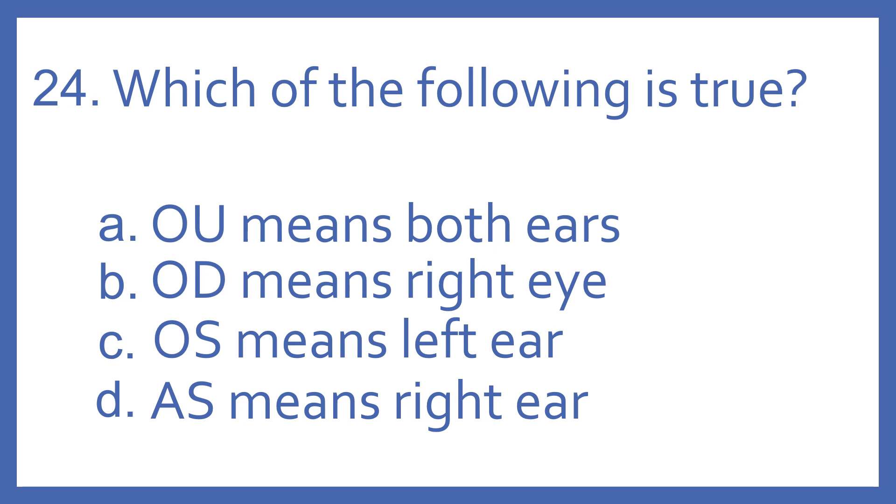Number 24, which of the following is true? A, OU means both ears. B, OD means right eye. C, OS means left ear. Or D, AS means right ear. And the answer is B. OD means right eye. That's the correct statement. OU means both eyes. OS means left eye. And AS means left ear.